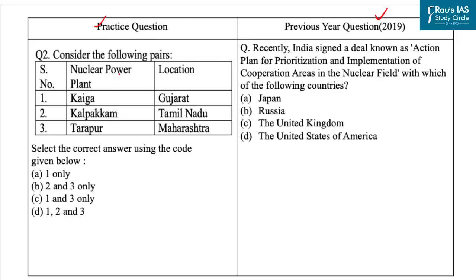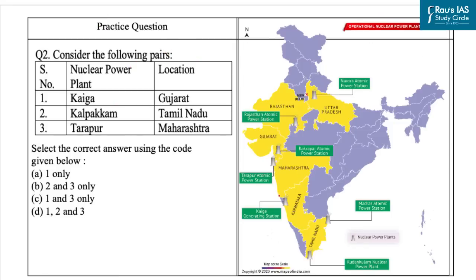Here you are provided with two columns: the first is nuclear power plant and the second is location, and you have to find the correct pair. The first one is Kaiga. As you can see, Kaiga Generating Station is a nuclear power generating station situated at Kaiga near the river Kali in Uttara Kannada district of Karnataka. So it's not in Gujarat, it's in Karnataka — this option is incorrect.